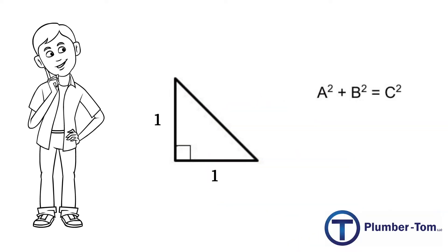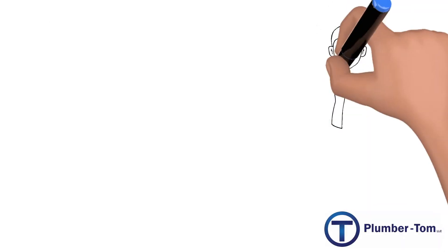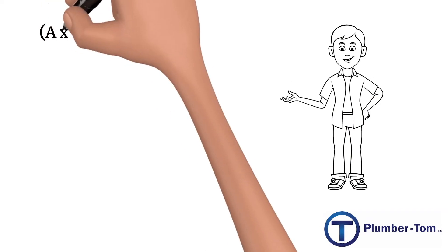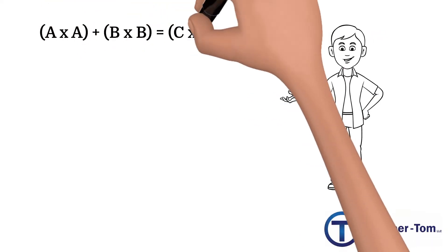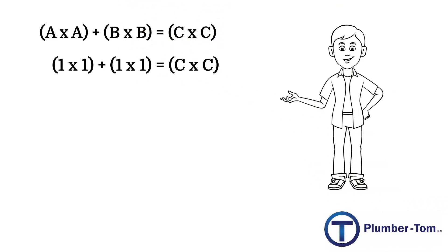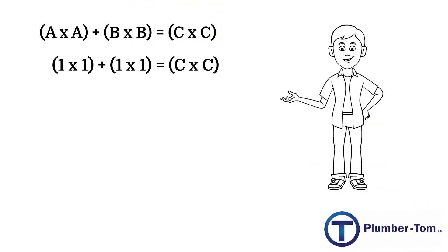What if we were to say the two shorter sides are each one unit in length? Let's use the Pythagorean theorem and solve for the diagonal c. Remember the Pythagorean theorem states that a times a plus b times b equals c times c. For our triangle this would mean 1 times 1 plus 1 times 1 equals c times c.